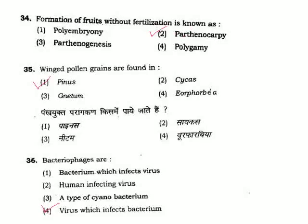Question 34: Formation of fruits without fertilization is called — parthenocarpy. Question 35: Winged pollen grains are found in — winged pollen grains are found in pinus. Option 1.